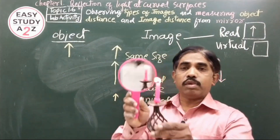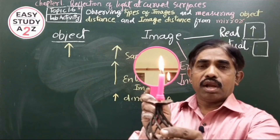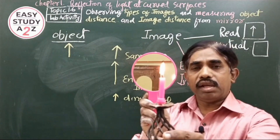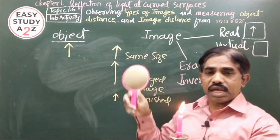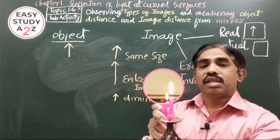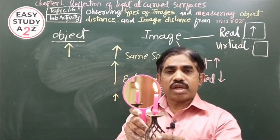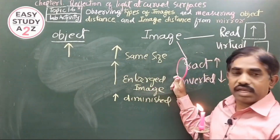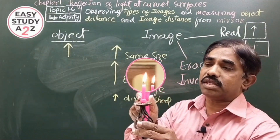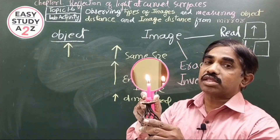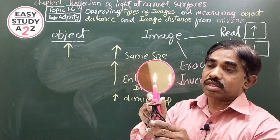For example, you can see the image of a candle in a plain mirror. The image of the candle inside the mirror is the same size as the object, so it is a same-size image. The image is also straight and upright, so we call it an erect image. Since we cannot get this image on a screen, it is a virtual image.